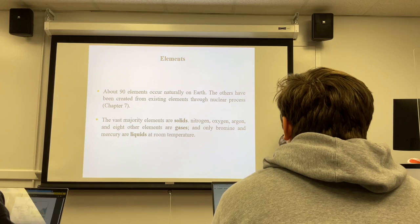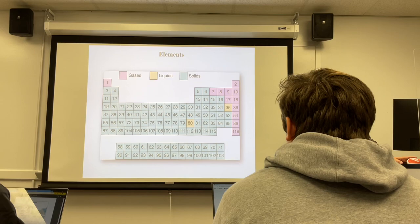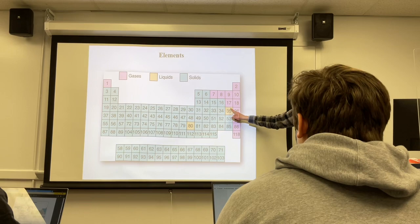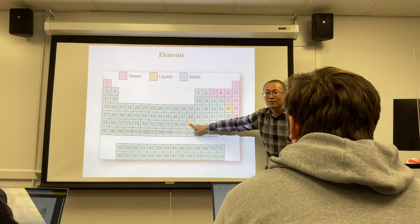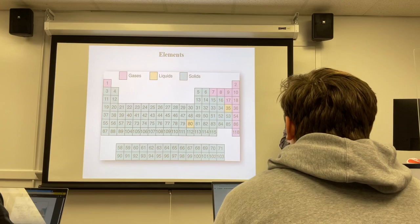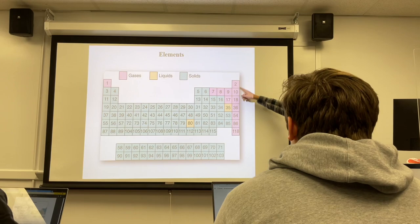Bromine is a nonmetal — the only nonmetal liquid. Mercury is a metal — the only liquid metal. The eight gas elements are hydrogen, nitrogen, oxygen, fluorine, chlorine, and the noble gases (Group 8A/18): helium, neon, argon, krypton, xenon, and radon. After memorizing the liquids and gases, you know all the rest are solids.